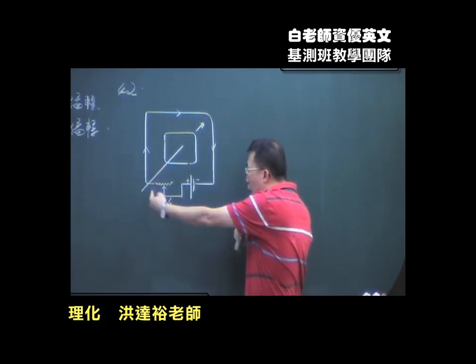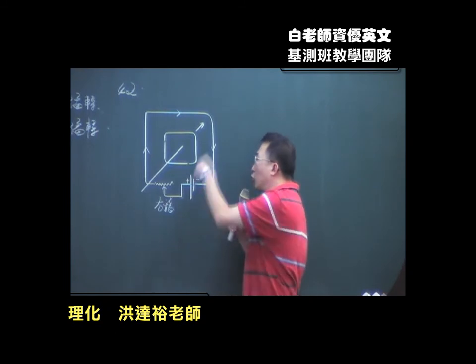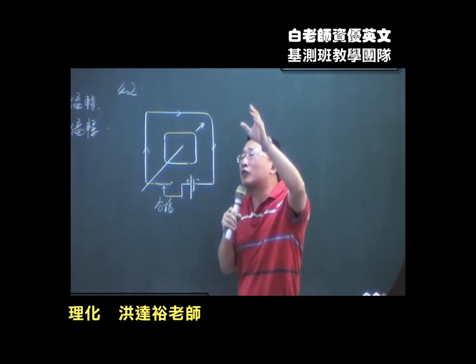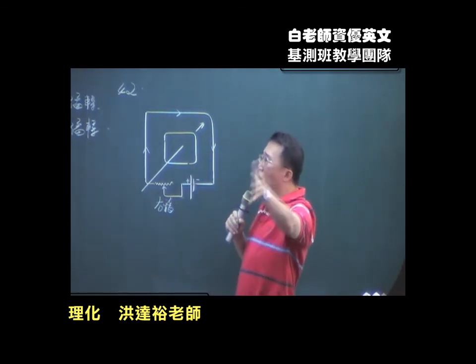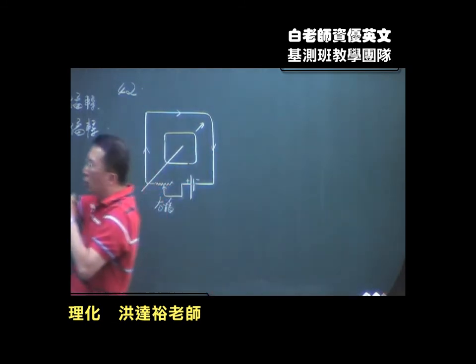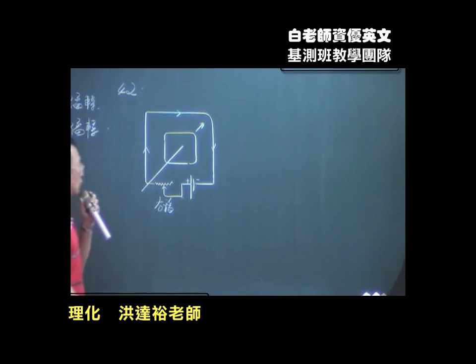这个磁场也很稳定，磁场很稳定的时候叫做磁场没有变化。按照法拉利定律，当你磁场没有变化的时候就没有感应电流了，对不对。